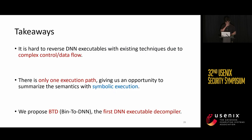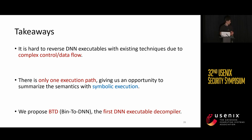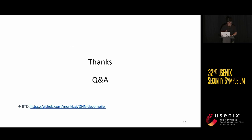To conclude, here are three takeaways. First, reversing DNN executables with existing techniques is hard due to complex control and data flow. Second, a DNN executable has only one valid execution path, and that gives us an opportunity to summarize the high-level semantics with symbolic execution. Third, we propose BTD, the first DNN executable decompiler. That's all for my presentation — thanks for listening, and I'm glad to take questions now.